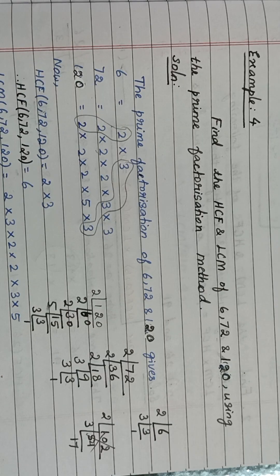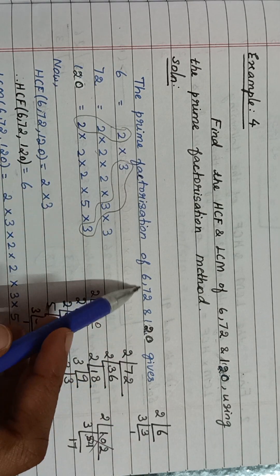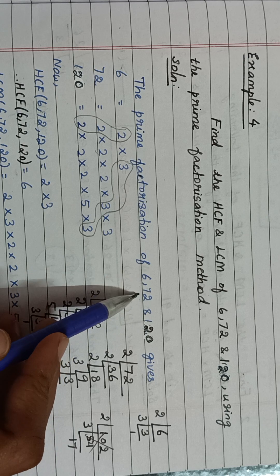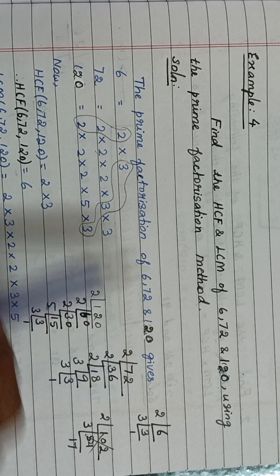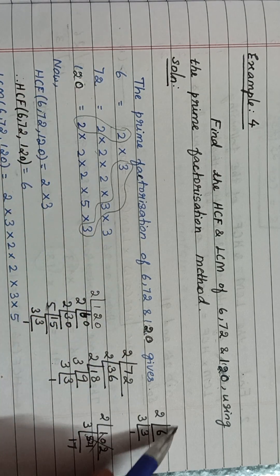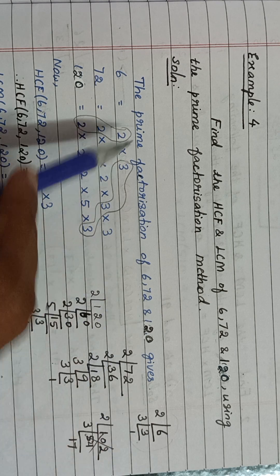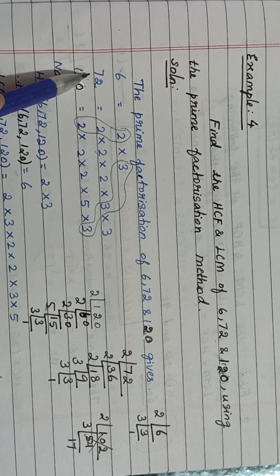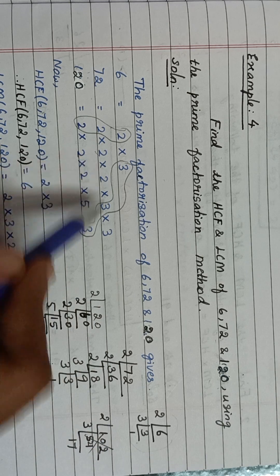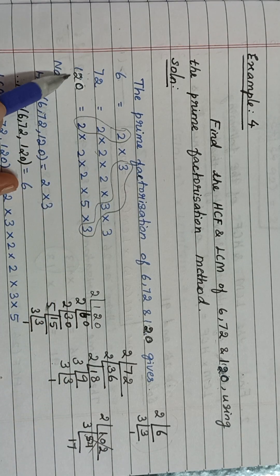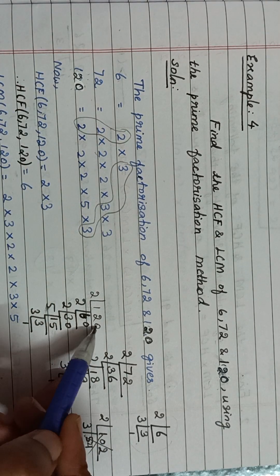That's why here they are doing the prime factorization method. The prime factorization of 6, 72, and 120 gives: 6 equals — when you prime factorize 6 you will get this. When you prime factorize 72 you will get this. When you prime factorize 120 you will get this.